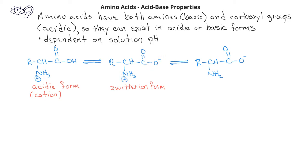This zwitterion form will be in equilibrium with the basic form of an amino acid. In the basic form, the carboxylate group is still unprotonated and has a negative charge, but now the amine group is just a neutral NH2.